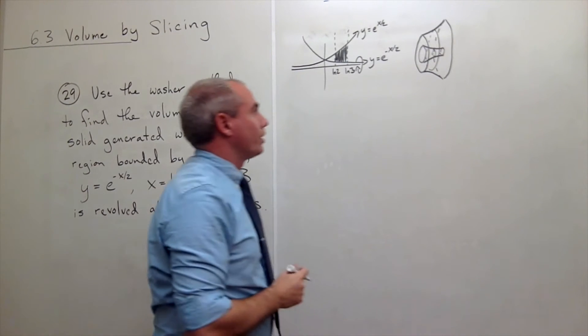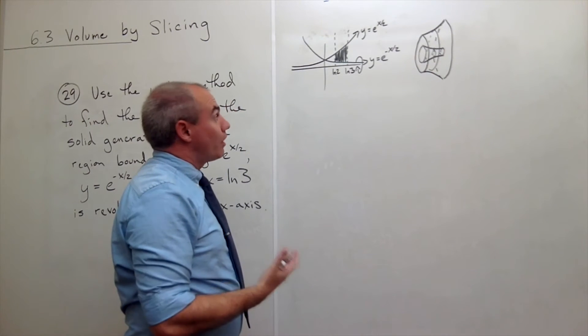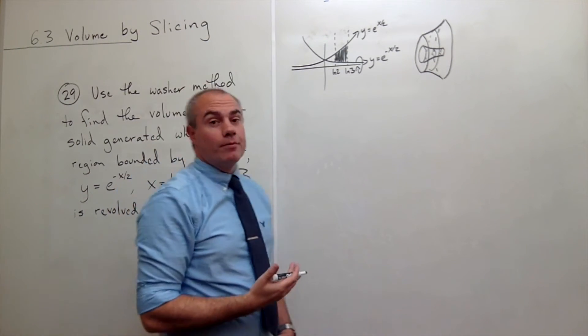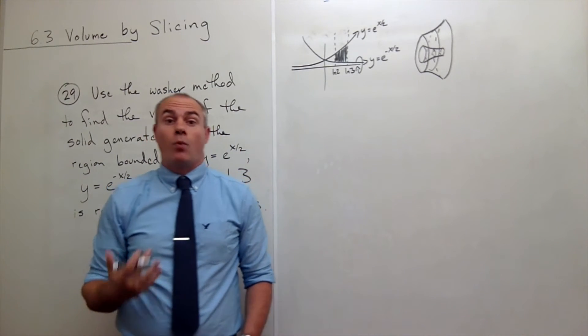There's a little washer. One cross section. All right. So how are we going to find the volume of this thing? We use what's called the washer method.